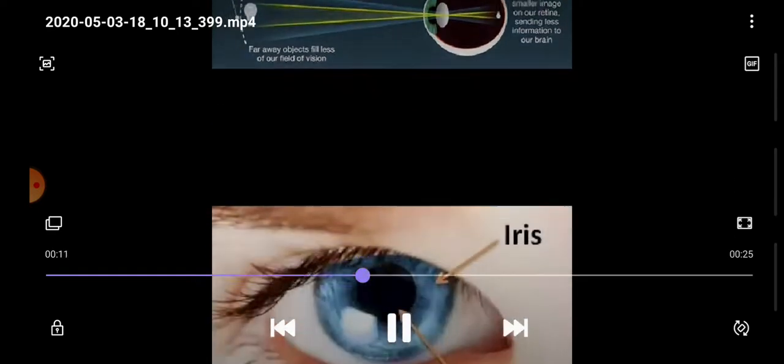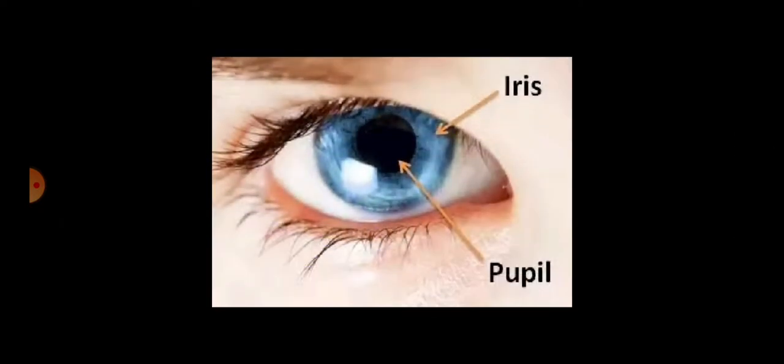When we try to see things in high light, iris senses the light and constricts the pupil to make it narrow. If it is low light, the iris senses the low light and dilates the pupil to make it wide. This process is called accommodation.